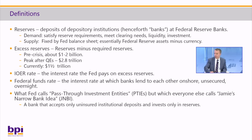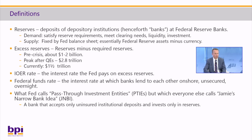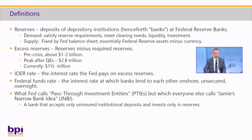Reserves are a liability of the Fed along with currency and they fund the Fed's assets. So you can think about the supply of reserves as the Fed's assets minus currency. Excess reserves are reserves minus required reserves. Before the crisis, those were about one to two billion dollars on average. The Fed paid no interest on excess reserves or required reserves, so banks sought to minimize them. After the wave of QEs in the crisis, they peaked at $2.8 trillion — more than a thousand times higher — and are currently about $1.5 trillion, still about a thousand times higher than before the crisis.